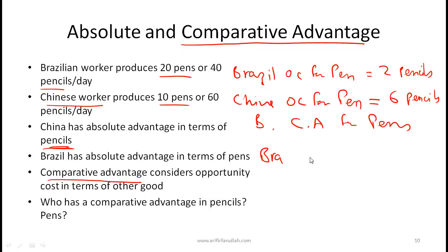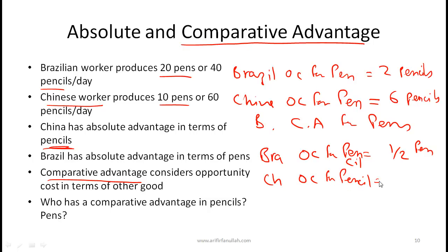What about comparative advantage for pencils? In Brazil, if a worker doesn't make a pencil, he can make half a pen — so the opportunity cost for a pencil is half a pen. In China, the opportunity cost for a pencil is one-sixth of a pen. China has the lower opportunity cost for pencils, so China has the comparative advantage in pencils. Therefore, China should focus on making pencils and Brazil should focus on making pens — through trade, both countries can be better off by increasing the overall number of pens and pencils they have.